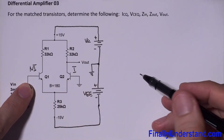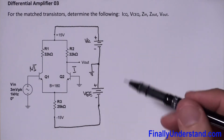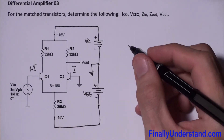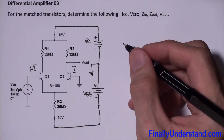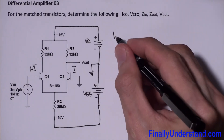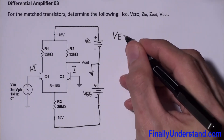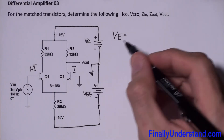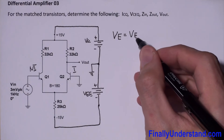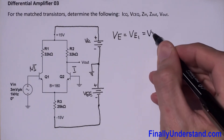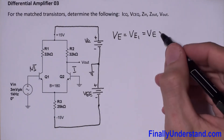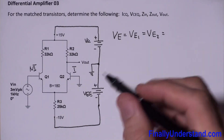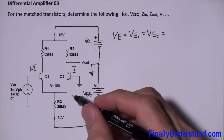At this moment we are going to assume that the non-inverting input is connected to ground, just for now — we assume no signal is going to the non-inverting input. Next, we're supposed to find VE. VE is the voltage at the emitter of transistor Q1 and also the emitter of transistor Q2.